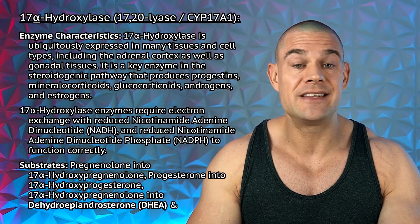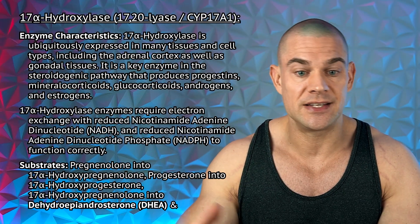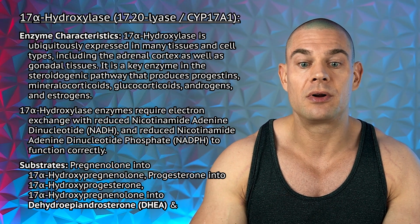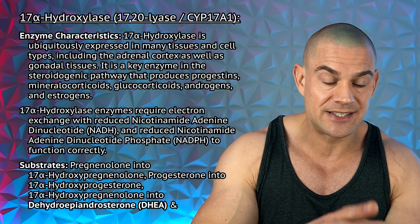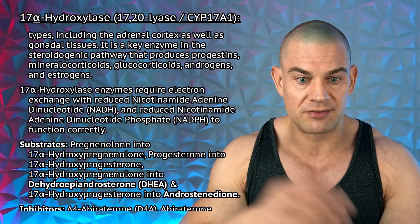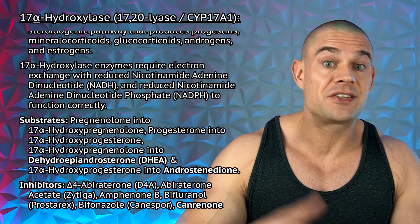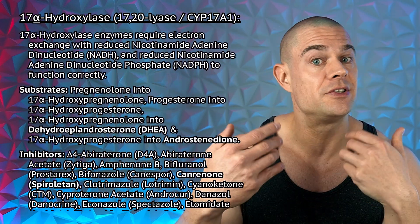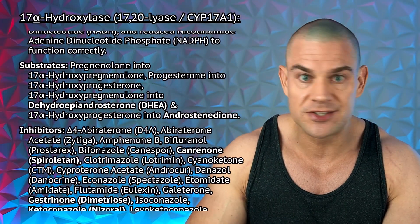Next on the list are the 17-alpha-hydroxylase enzymes, also found in the adrenal cortex, ovaries, and testes. This is a key enzyme in the steroidogenic pathway that produces progestins, mineralocorticoids, glucocorticoids, androgens, and estrogens — at least in the earliest steps. You can see on screen that it converts pregnenolone with several intermediates into DHEA, as well as 17-alpha-hydroxyprogesterone, which converts into androstenedione, which downstream converts into testosterone. So you might be inhibiting testosterone synthesis downstream.